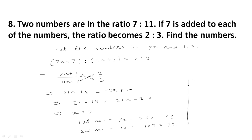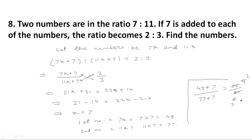We can also verify the answer: 49 plus 7 upon 77 plus 7 is equal to 56 upon 84. Dividing by 14 gives 4 upon 6, which simplifies to 2 is to 3. So our answer is correct. Please like and share our videos and subscribe to our channel if you haven't. Thank you.